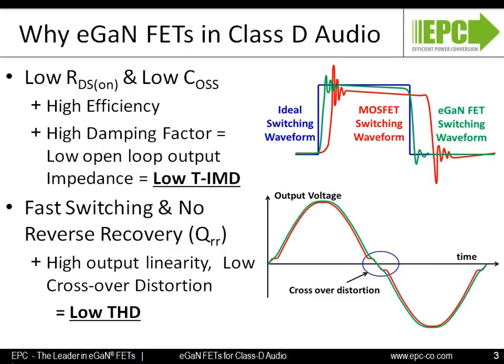Now we'll look at the specific benefits that eGANFETs bring to Class-D audio amplifier applications. Class-D audio systems are similar to switch mode power supplies operating at 50% duty cycle. In these systems, the audio performance is impacted by the FET characteristics. Just like MOSFETs used in traditional Class-D audio systems, the RDS-ON and QG of the eGANFET directly influence the efficiency, and also have a major impact on sound quality.